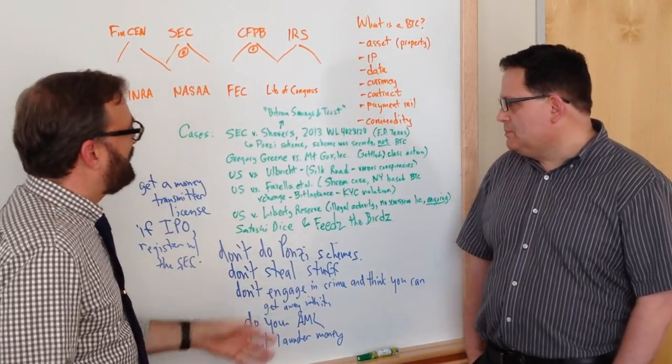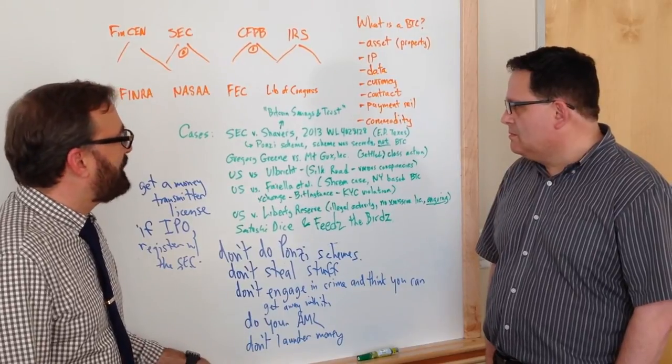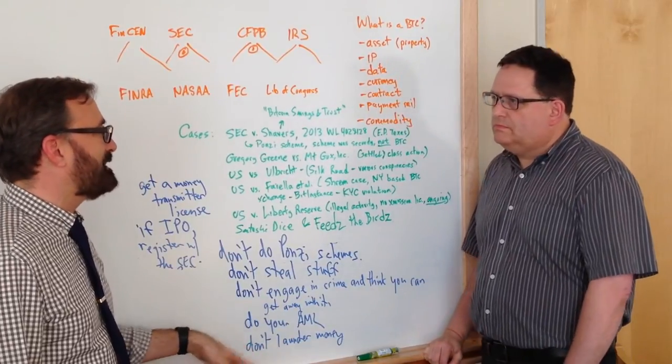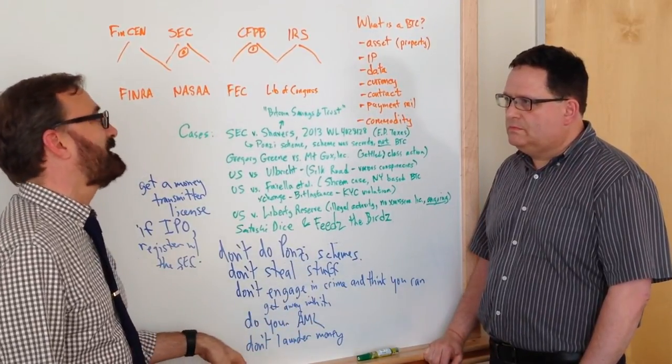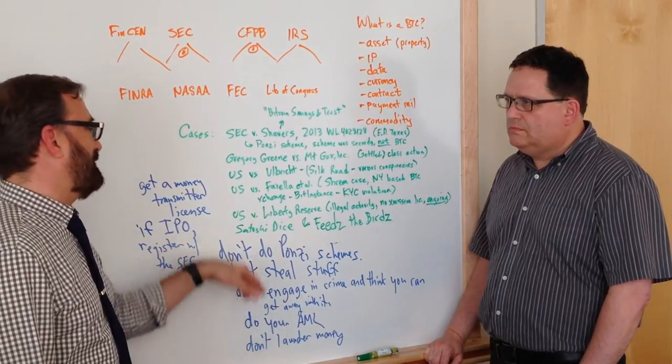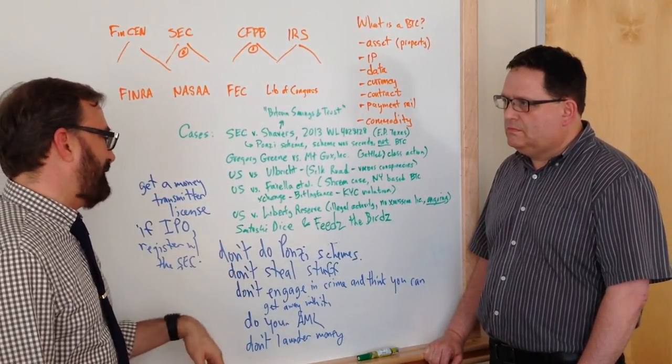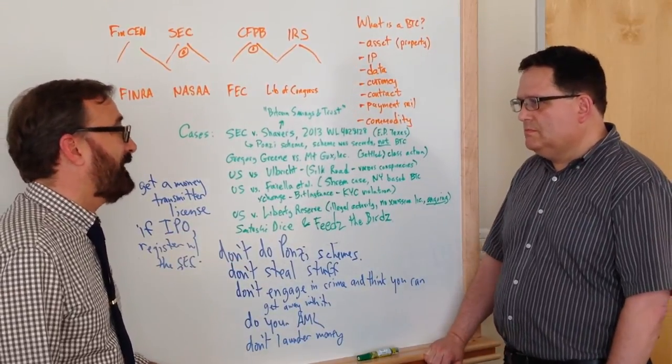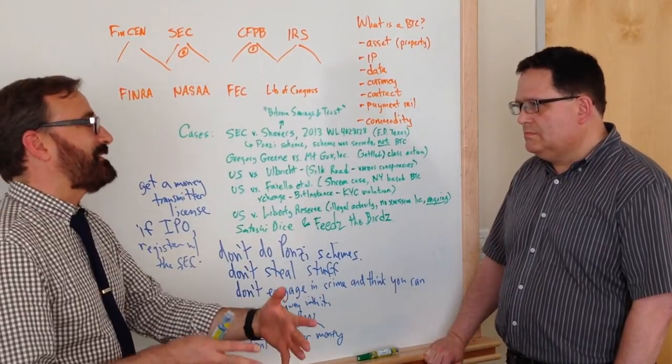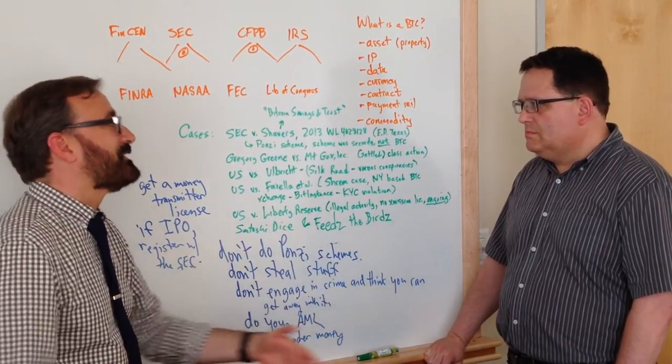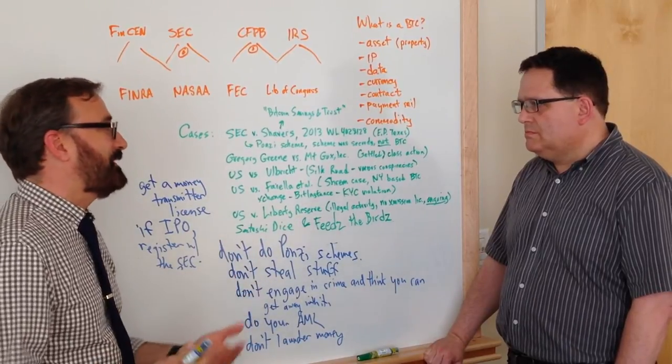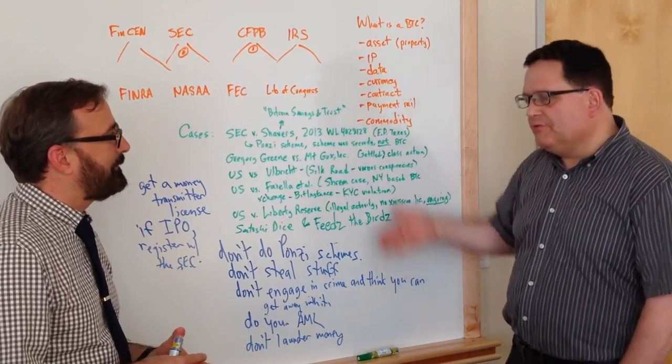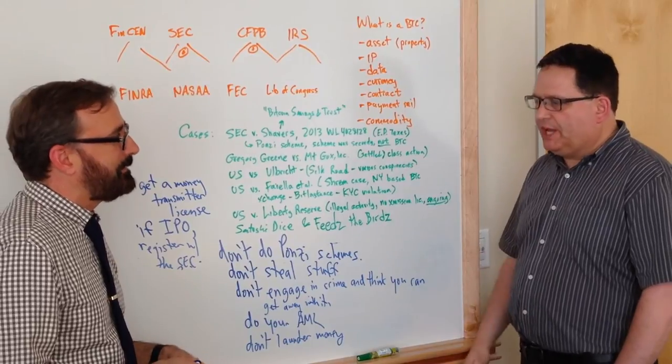I guess, one thing that's really interesting to me running down these cases is how in each of them Bitcoin really isn't the issue. Right? The issue is existing regulations, existing rules, law and policy around everything having to do with fraudulent schemes to theft, to registering with the appropriate agencies if you want to have an IPO. So, Bitcoin isn't the thing that's being kind of brought to trial, so to speak. It's all these other things that people happen to be doing kind of with or around Bitcoin related businesses. Right. And that certainly makes sense for this kind of first batch of cases.